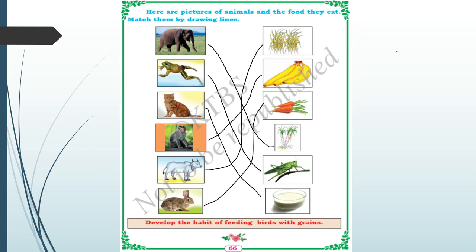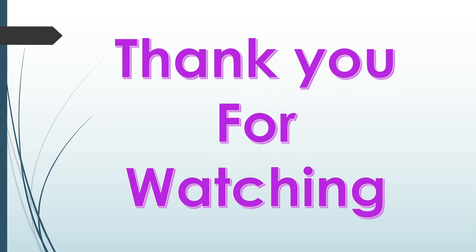I hope you understand this chapter. The main thing is there are different types of animals which need different types of food. In the same way, we human beings also need food to survive. We have three different meals: morning breakfast, afternoon lunch, and dinner at night. This completes the chapter — I hope you like this video. Thank you for watching, see you in the next chapter.